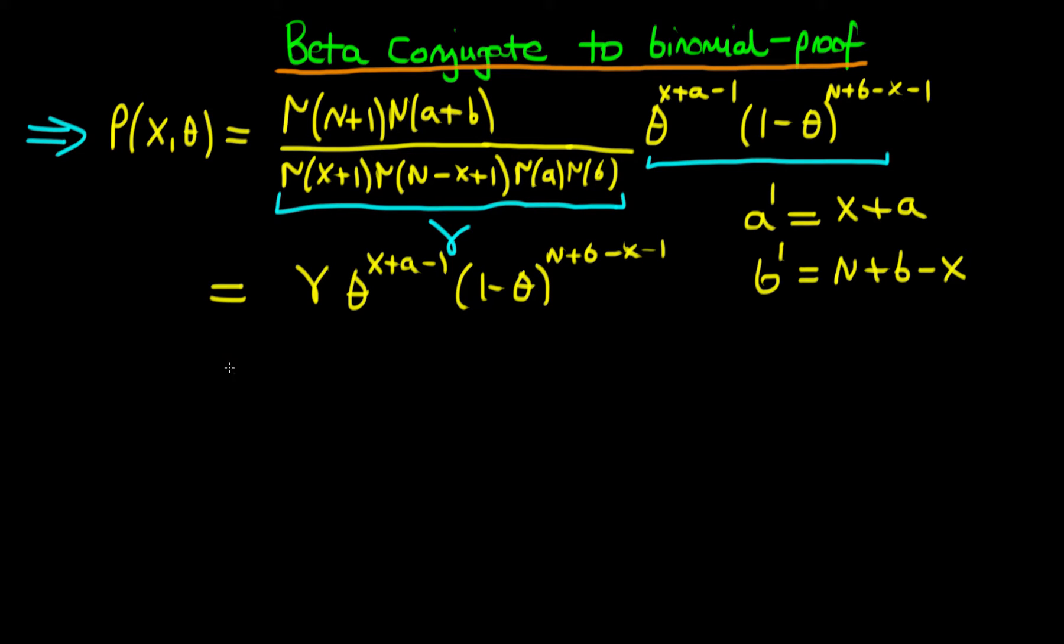So if we just take our original expression here, and realize that in order to make it exactly a beta distribution, we need to first multiply through by gamma of a prime plus b prime. Well, a prime plus b prime here is just going to be a plus b plus n, divided through by gamma of the new a prime, which is gamma of x plus a, times the gamma of the new b prime, which is gamma of n plus b minus x.